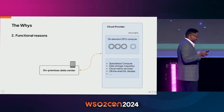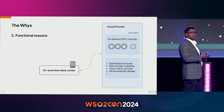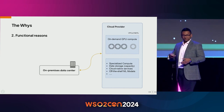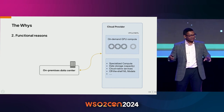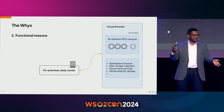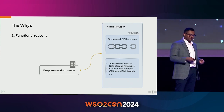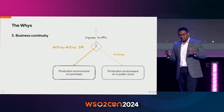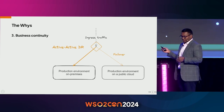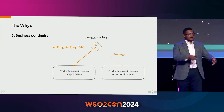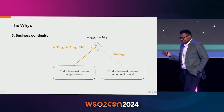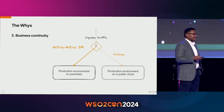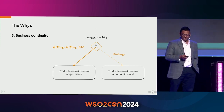There are many other reasons for hybrid configurations: you might want burstable compute to train LLMs without buying GPUs, connecting up to the cloud as needed. Another domain is business continuity — your primary production environment is on-premise and you have a standby secondary environment with a cloud provider. It sounds great in theory, but it's an easy way to shoot yourself in the foot, which we'll get into.